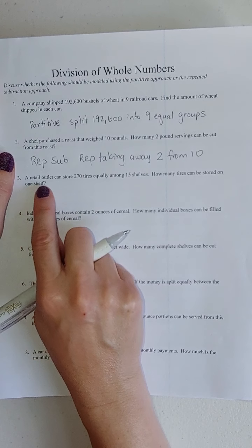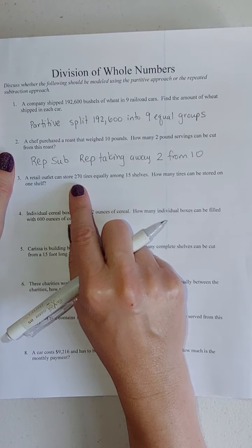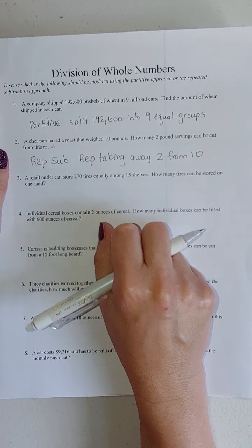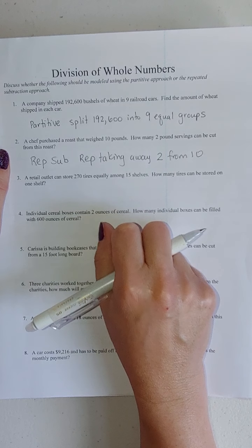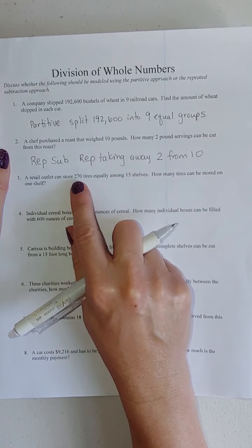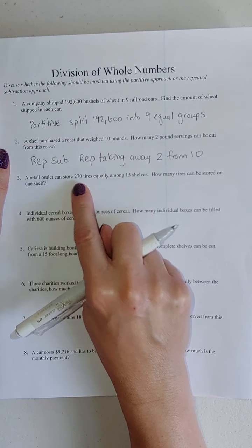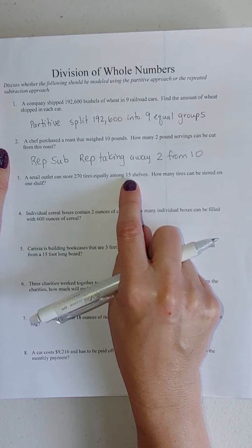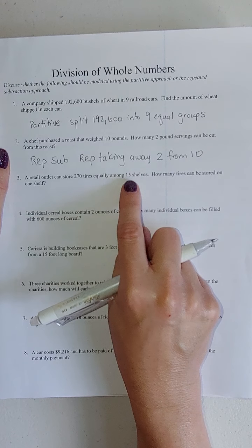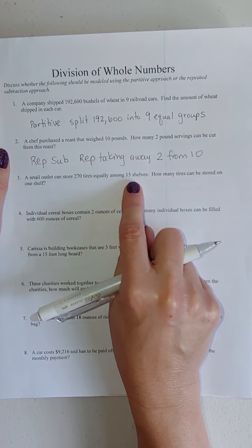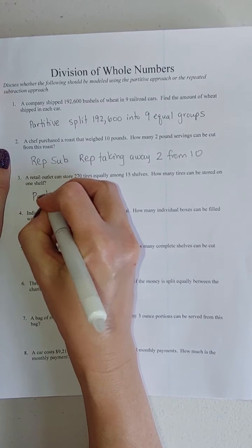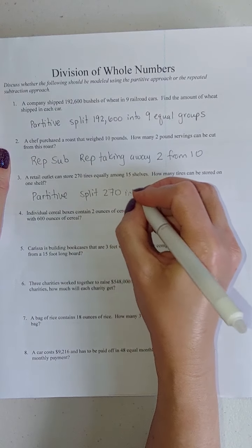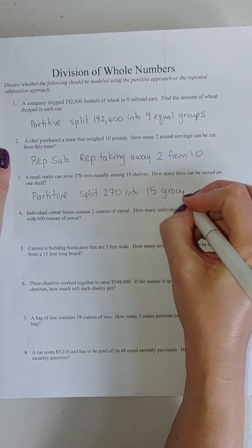A retail outlet can store 270 tires equally among 15 shelves. How many tires can be stored on one shelf? Is this partitive or repeated subtraction? Starting with 270, am I splitting it into 15 equal groups? Or am I repeatedly taking away 15 until nothing is left? I'm splitting it into 15 equal sized groups. The shelves are the groups. So this one's a partitive.